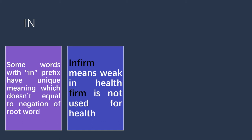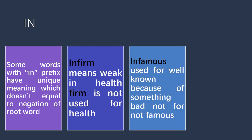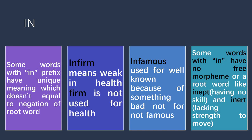Some words made by adding the prefix 'in' may have a unique meaning — meaning it doesn't equal the opposite or negative of its root word. For example, the word 'infirm': we made it by adding 'in' as a prefix to 'firm,' but 'infirm' has the meaning of weak in health, which is not the opposite of 'firm,' because we never use 'firm' to mean good in health.